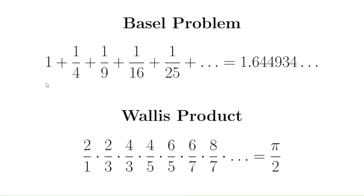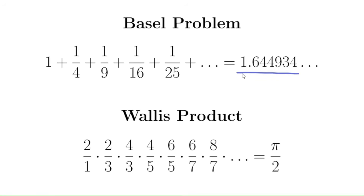If we start adding these numbers up — and you can actually do this on a calculator — so 1 plus 1/4 that'd be 1.25, and then add 1/9, 1/16 and so on. Well this starts getting closer and closer to, starts converging to, some number. And mathematicians in Euler's day had calculated this number to several decimal places, but they were completely stumped as to what the number is. And this was known as the Basel problem: to try to figure out what this number is.